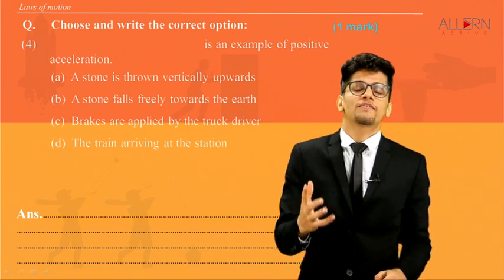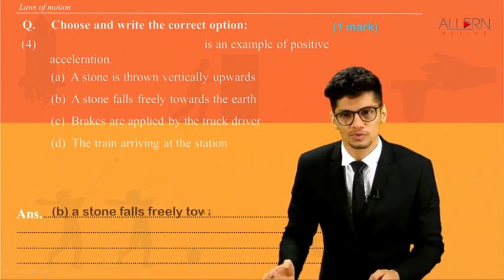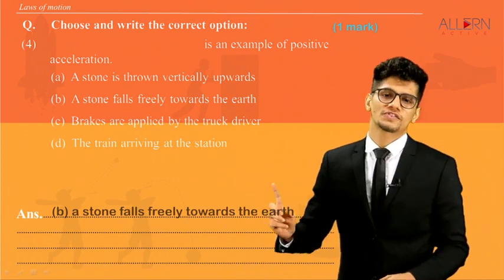A stone falls freely towards the earth. Yes. When it falls freely towards the earth, its velocity keeps on increasing. So the correct answer is a stone falls freely towards the earth.